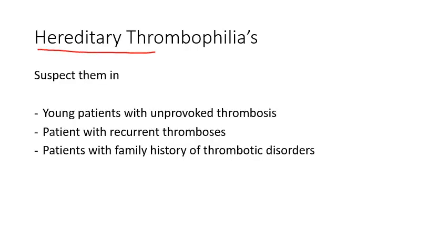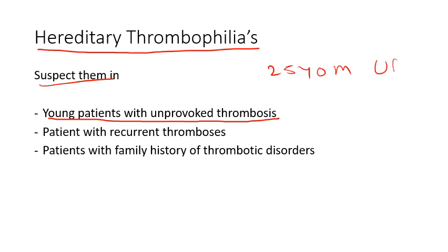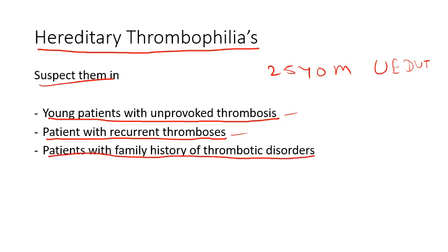When should you suspect hereditary thrombophilias? In three main situations: first, a young patient with unprovoked thrombosis — for example, a 25-year-old male with upper extremity DVT and no established risk factors. Second, a patient with recurrent thrombosis — say someone presenting with their fourth DVT episode in a couple of years. Third, a patient with a family history of thrombotic disorders, which is a clear indicator of a possible genetic disorder.